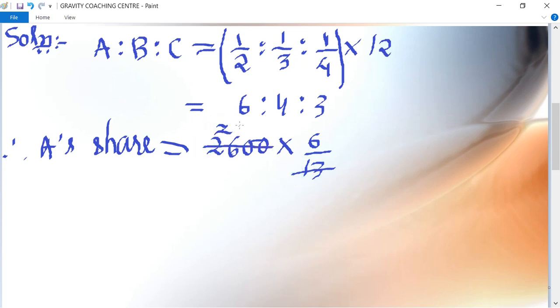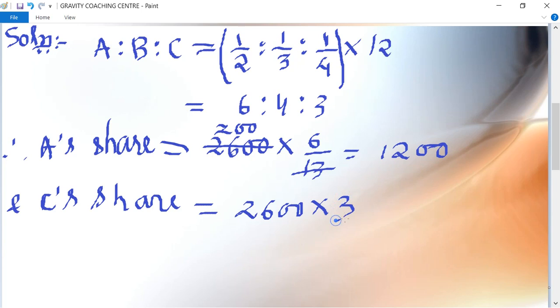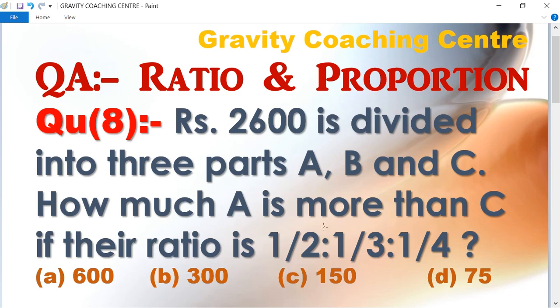And C's share equals 2600 into 3 upon 13. After canceling, C's share is 600.